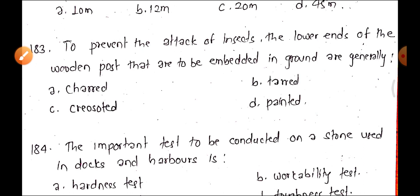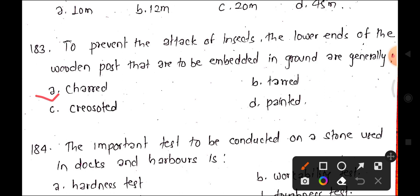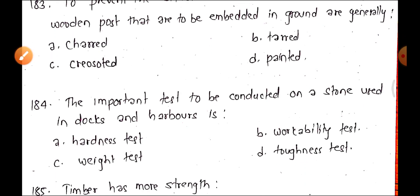Question 183: To prevent the attack of insects, the lower end of wooden posts that are to be embedded in ground are generally — A: charred, B: tarred, C: creosoted, or D: painted. The answer is option A.